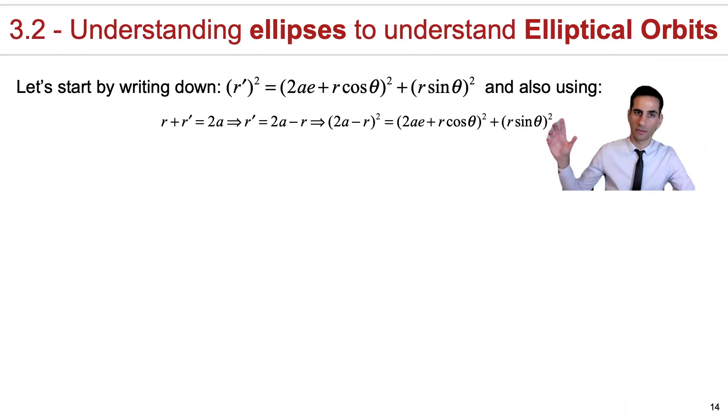There are two important main steps. One is to write the equation of an ellipse with r plus r prime equals 2a, and you can re-express it. Then go to the expression that we had before and just substitute in.